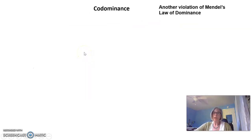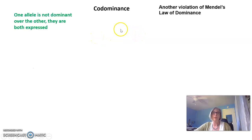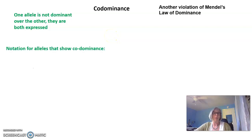The last type of non-Mendelian inheritance I want to talk about is codominance, another violation of Mendel's law of dominance. In this case, one allele is not dominant over the other — they are both expressed.